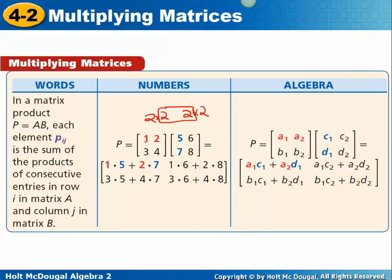Matrix P equals matrix A times matrix B. You start with the first row of your first matrix and work with the first column of the other matrix. Multiply the first number in the first row by the first number in the first column, then add the product of the second number in the first row by the second number in the first column — that's 2 times 7. So 1 times 5 is 5, plus 2 times 7 is 14, giving a first entry of 19.